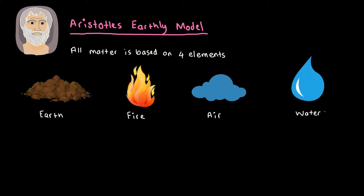And then for the next 2000 years or so, the whole idea of atomic models was forgotten, until the year 1803, when John Dalton came up with a new model of the atom, which he based on five factors.